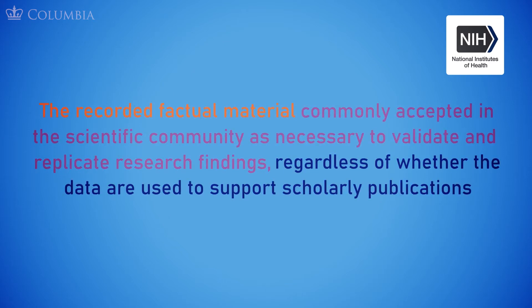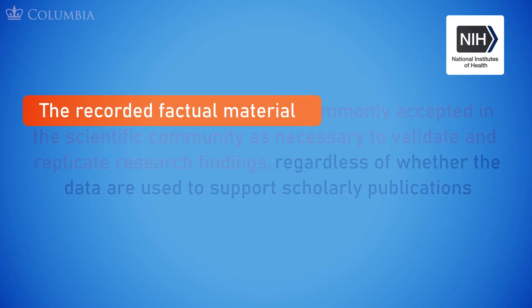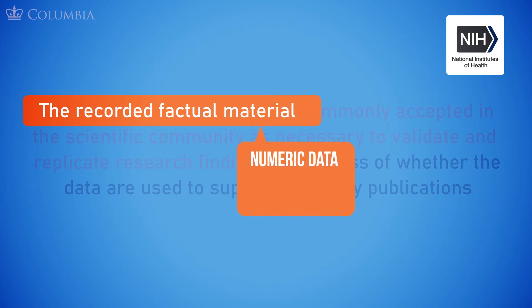Let's break this definition down. Recorded factual material can include numeric data, typically numbers organized in tables; spatial data, information that includes location coordinates, typically represented on a map; and textual data, text organized or encoded to allow for automated analysis.